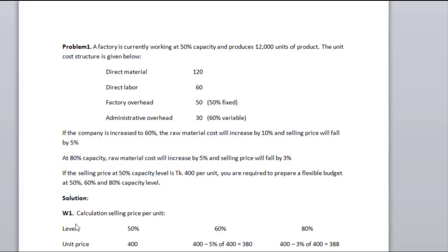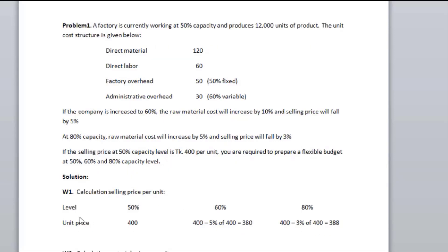Working one: calculation of selling price per unit. At 50% level, the selling price is the base. At 60% level, the selling price falls by 5%. At 80% level, the selling price falls by 3%, giving us approximately 388 per unit.